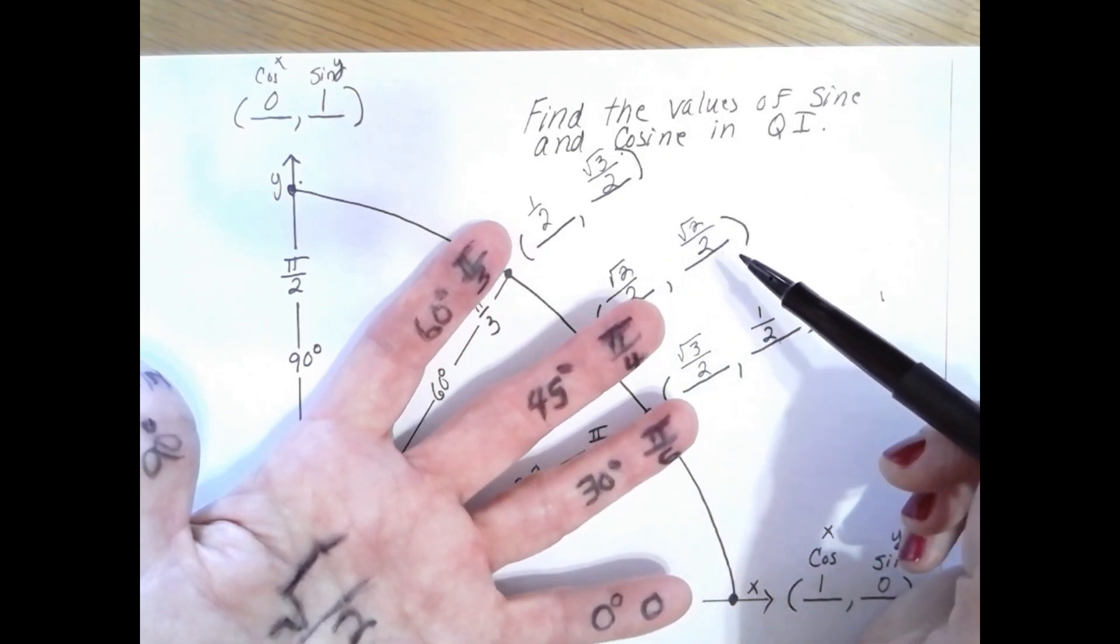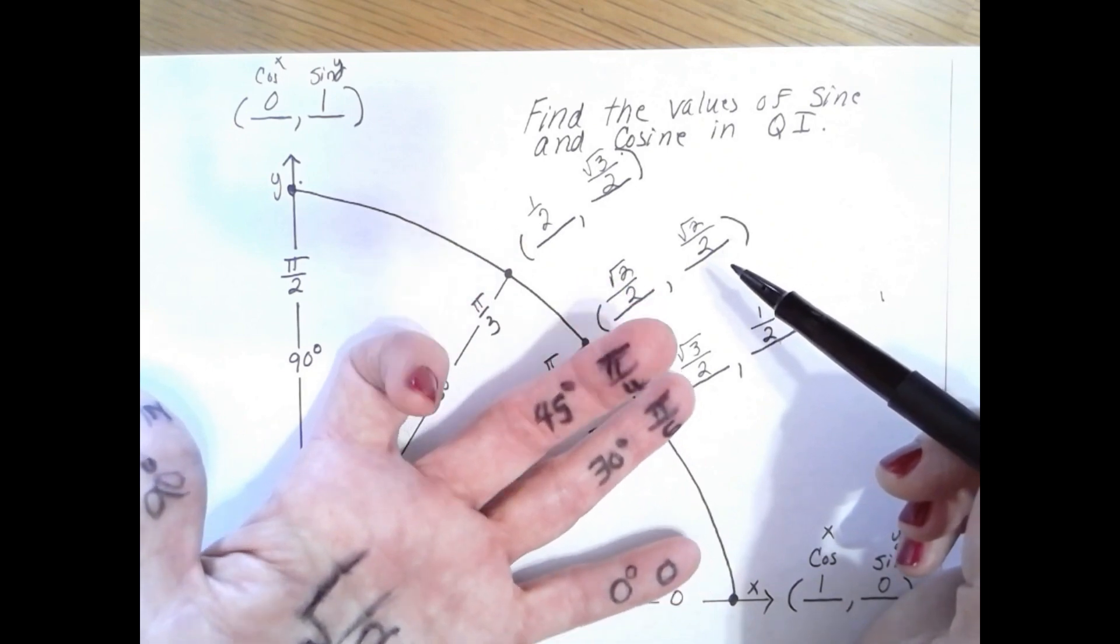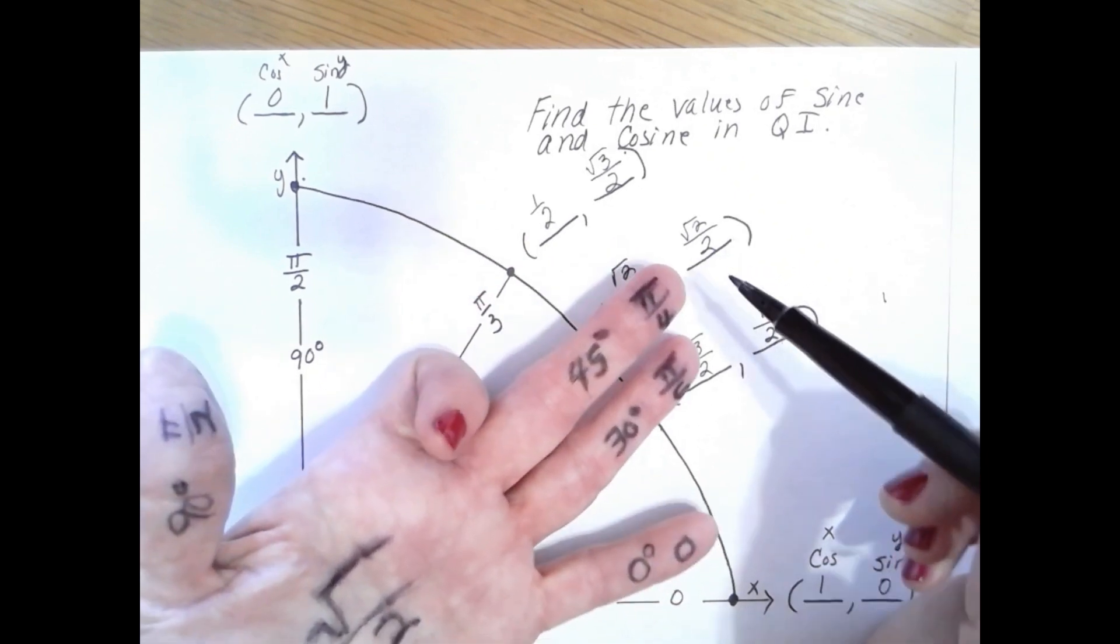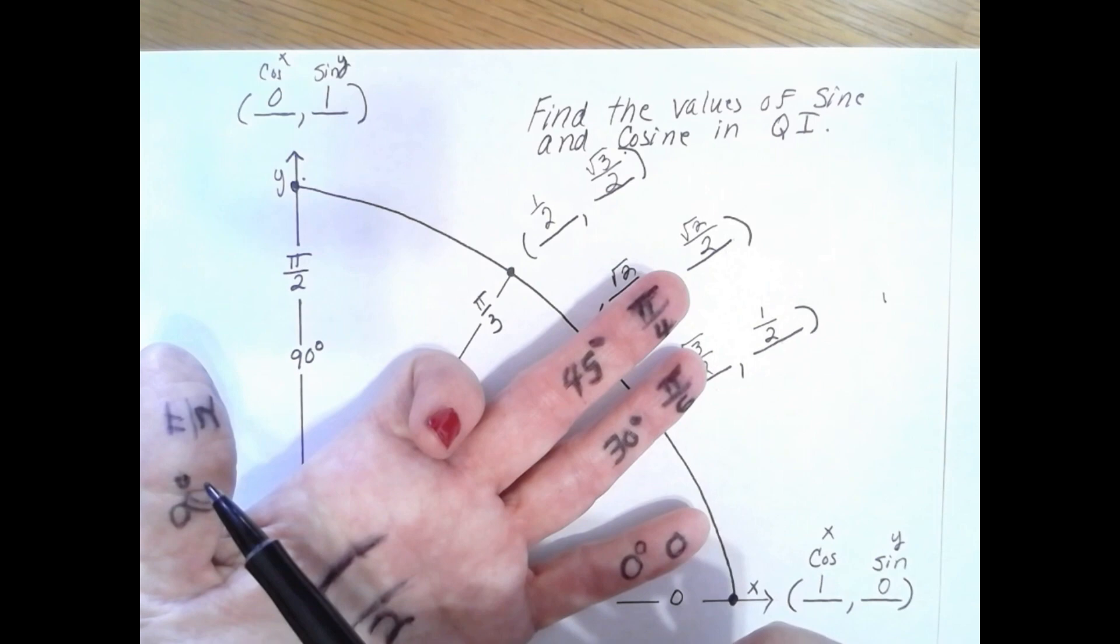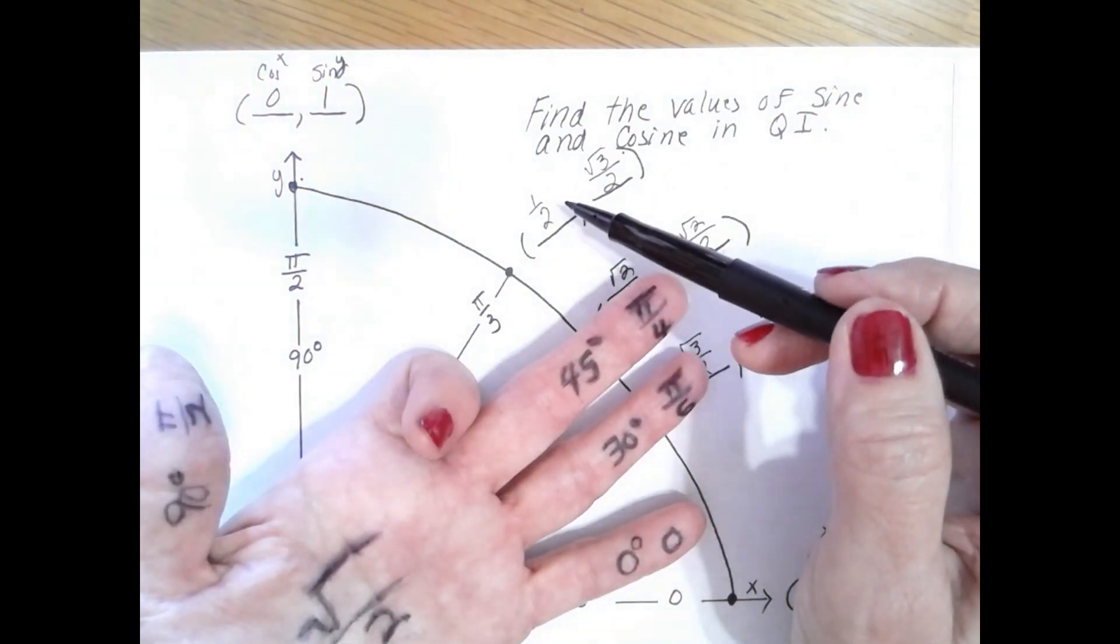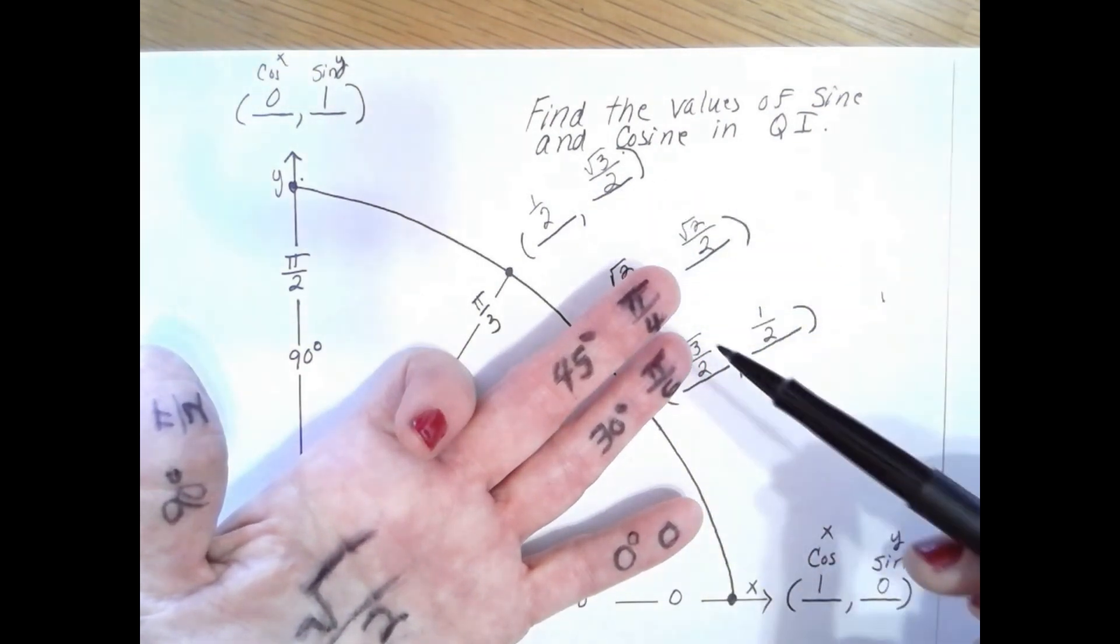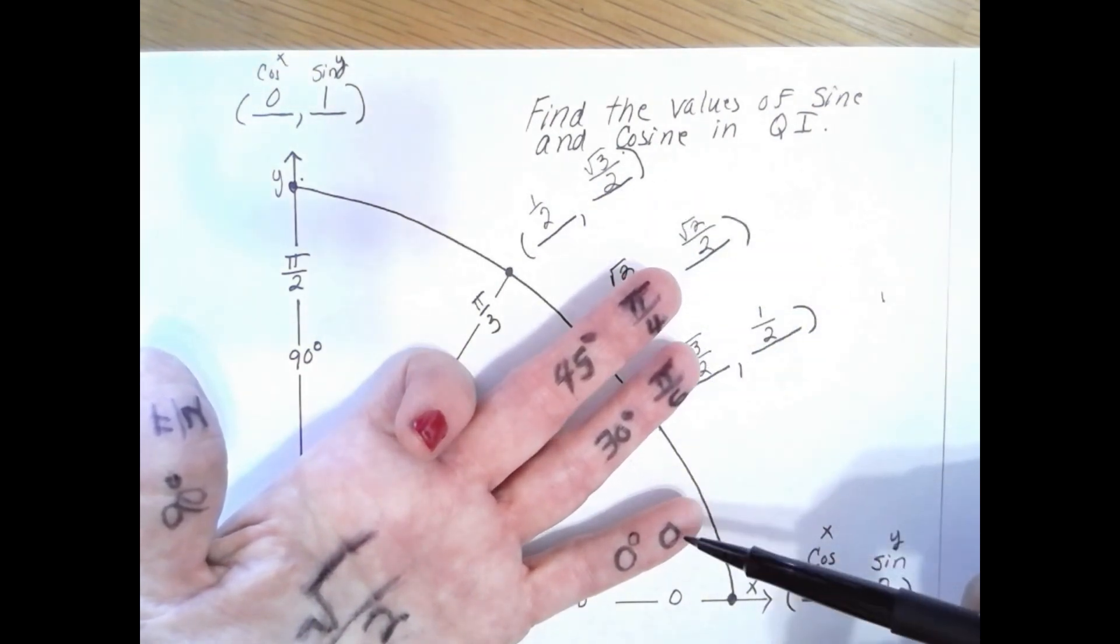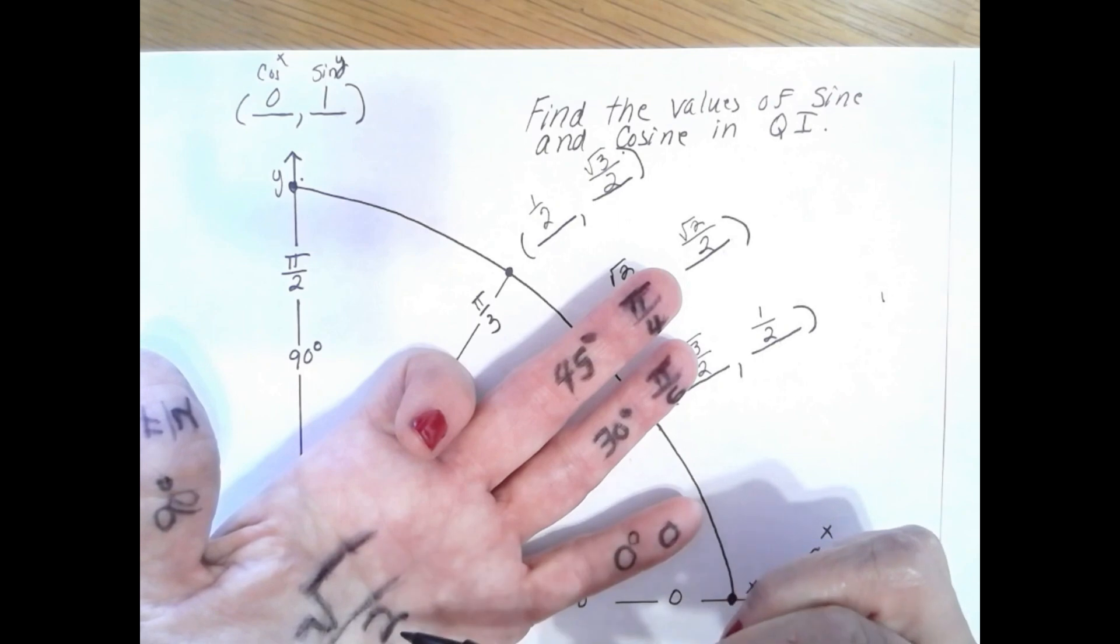Now let's look at 60 degrees or π over 3. If I pull that finger back I can see that on the left I have 1. The square root of 1 is 1 over 2, giving me 1 half for cosine. On the right side I have 1, 2, 3 fingers, so the square root of 3 over 2. That gives me the value of sine.